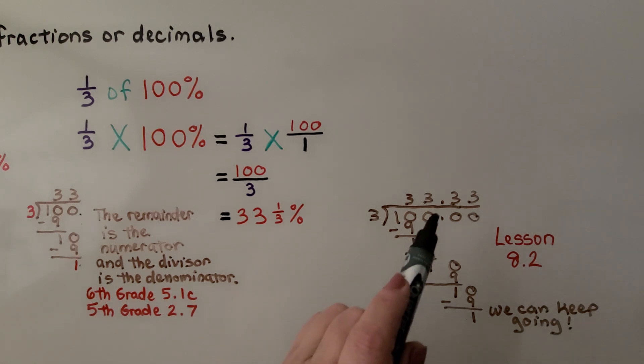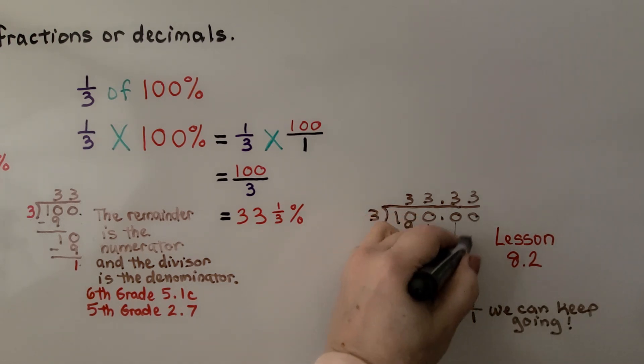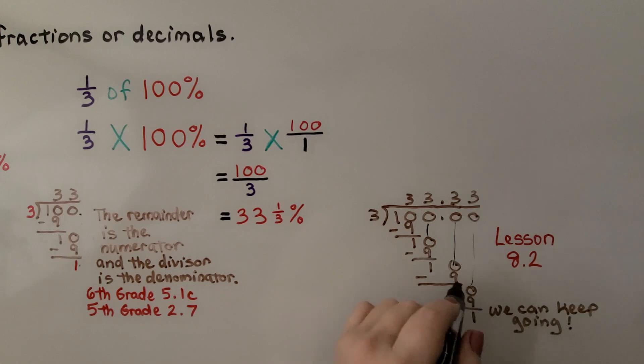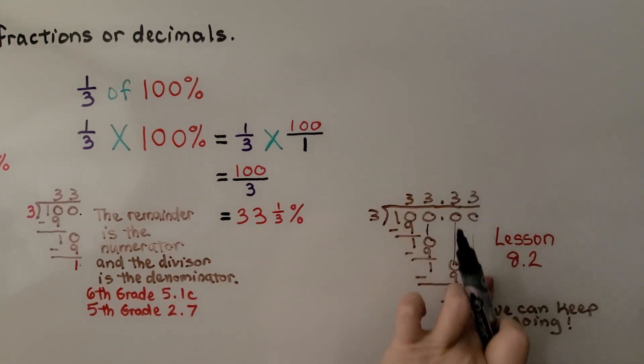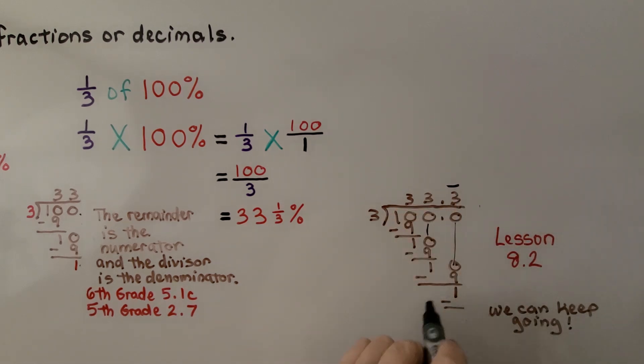If we did add the decimal point and added more zeros, we could just keep bringing them down, and every time a zero would come down, we'd have another 10, and say 3 goes into 10 three times. 3 times 3 is 9, we'd subtract and get a 1 again. We can add another zero and bring it down and say 3 goes into 10 three times, and we could just keep going and going and going. And it's a lot easier to just stop, and if we have the same number repeating, we could just put a bar over the top of that. We're going to learn more about decimals in percentages in lesson 8.2.